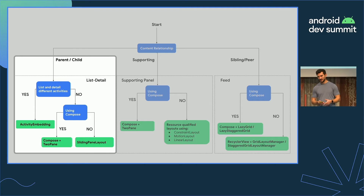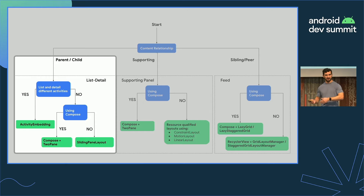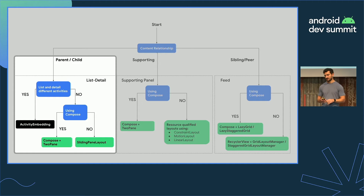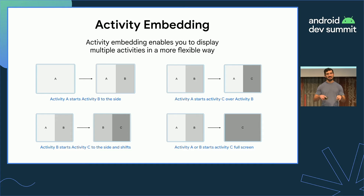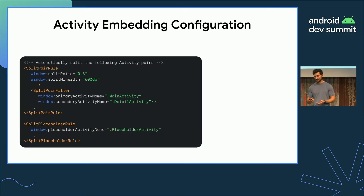So trying to simplify the flowchart, there are a couple of decisions to consider when building a list detail layout. If you have UI content spread across multiple activities within your application, we now have a solution called activity embedding. Activity embedding is a new platform feature supported on devices running Android 12L and later that lets you display UI content for multiple activities from your own application within a single task with just configuration. It's very easy to implement — kind of the shortcut to a list detail layout if you're using multiple activities.